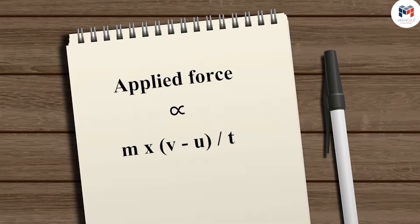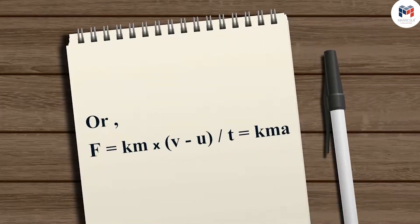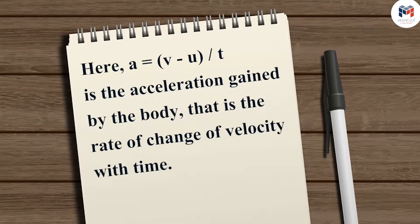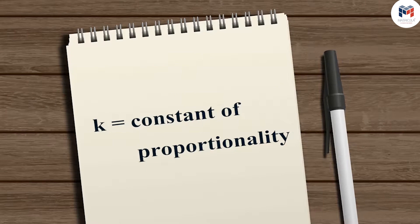That is, the applied force is proportional to M(V − U)/T. So F = K × M × (V − U)/T, which can be written as K × M × A, where A = (V − U)/T is the acceleration gained by the body — that is, the rate of change of velocity with time. The quantity K is a constant of proportionality.